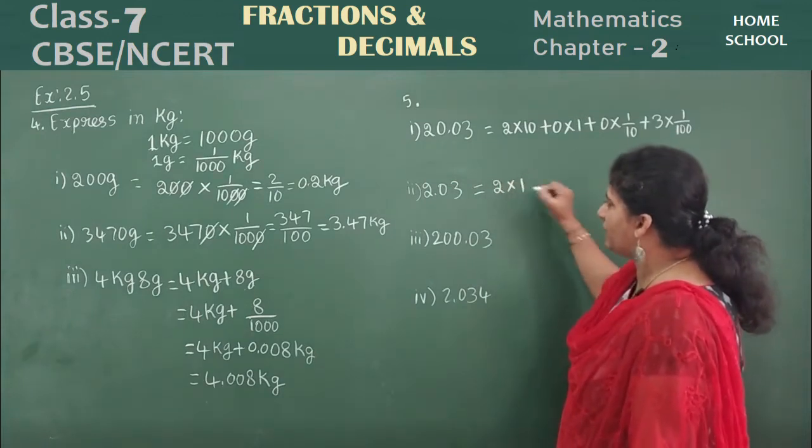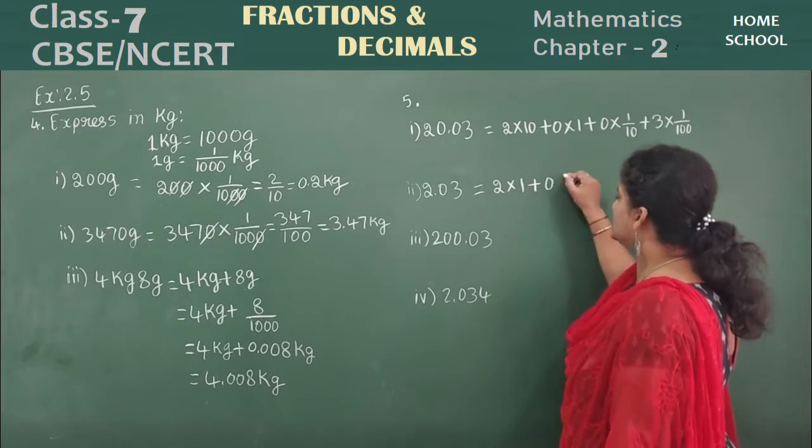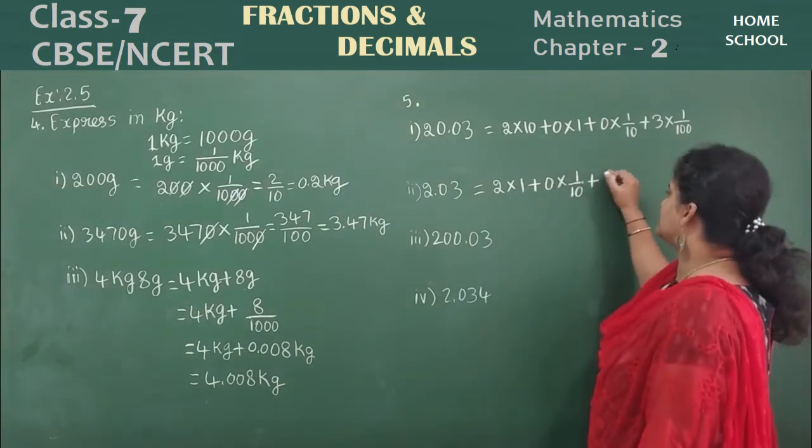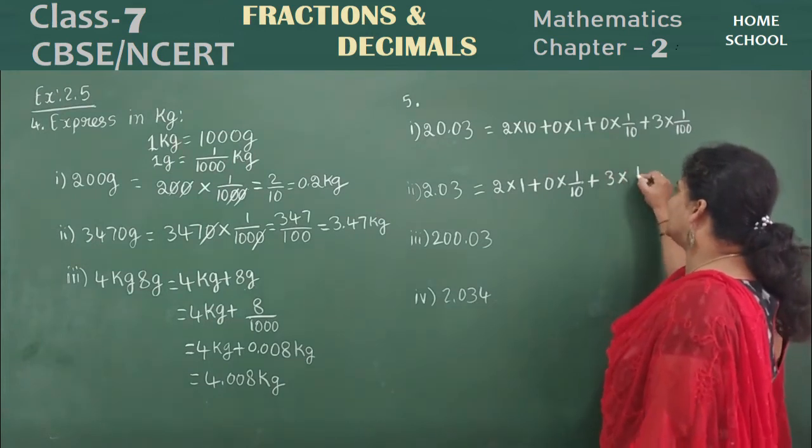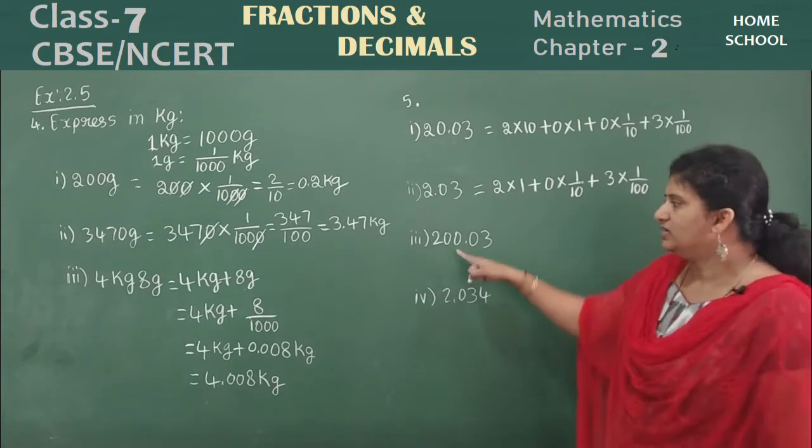So now split this one. 2 is in ones place. 2 into 1 plus 0 is in tenth means 1 by 10 plus 3 is in hundredth, 3 by hundredth, 3 into 1 by 100. So next one.